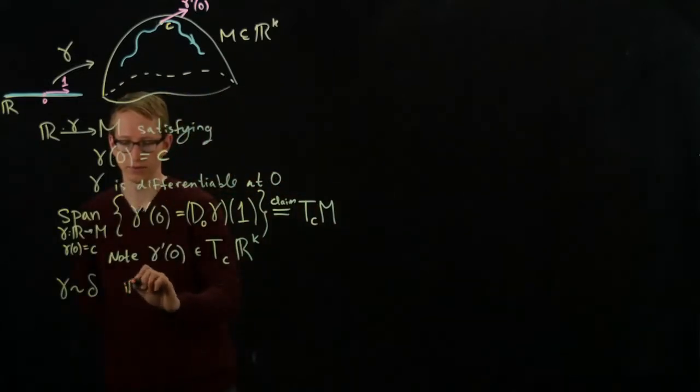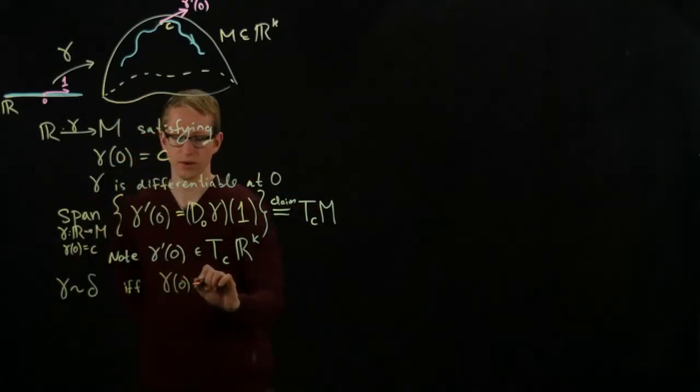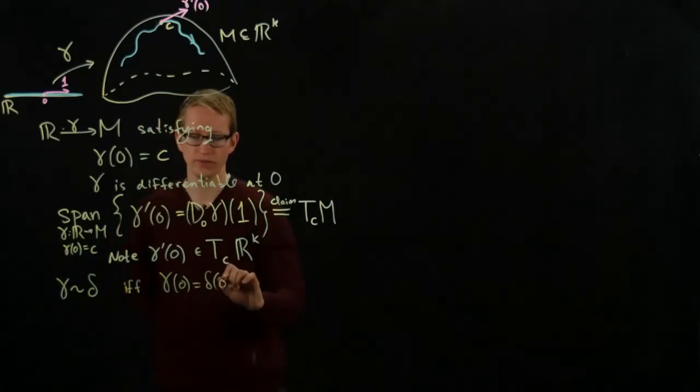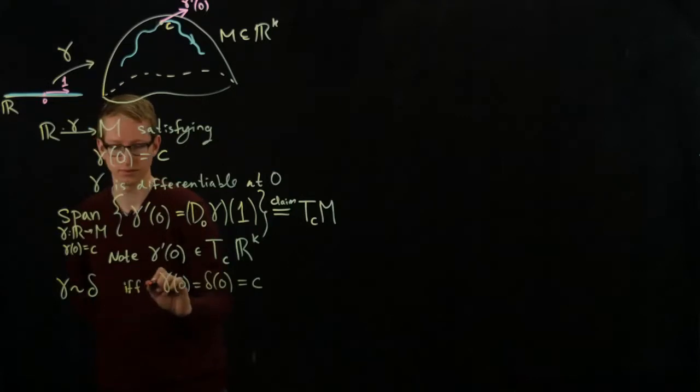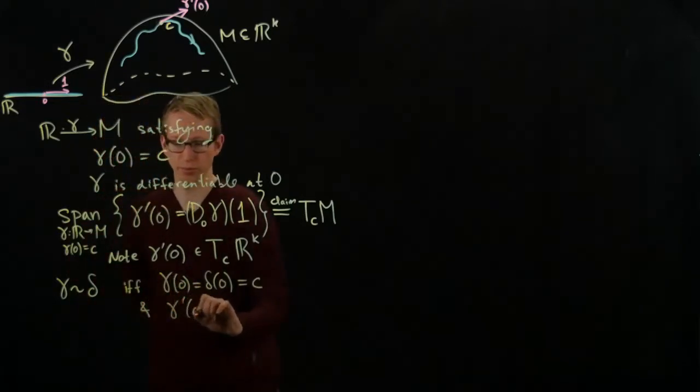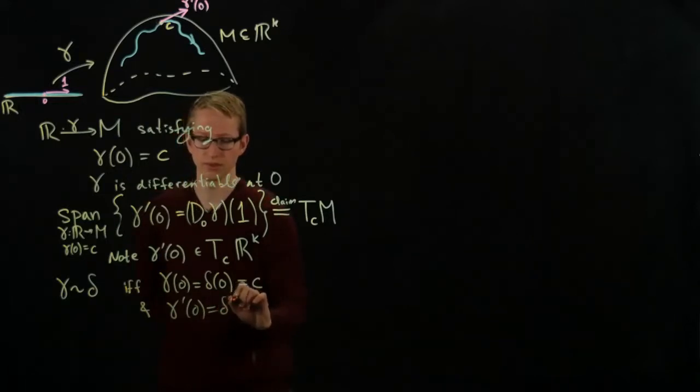If and only if, first of all, their points agree at 0, and secondly, so this is the first condition, and gamma prime 0 equals delta prime 0. So we identify any two curves.